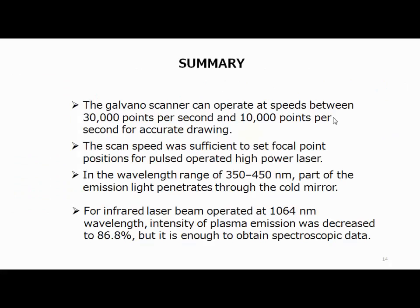In summary, the galvanometer scanner can operate at speeds between 30,000 points per second and 10,000 points per second for accurate drawing. The scan speed was sufficient to set the focal point position for the pulse-operated high-power laser. In the wavelength range of 360 to 450 nanometers, part of the emission light penetrates through the cold mirror. For the infrared laser beam operated at 1064 nanometer wavelength, intensity of plasma emission was decreased to 86.8%, but it is enough to obtain the spectroscopic data. Thank you very much.